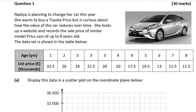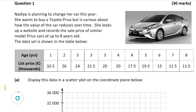Hello and welcome to the video. Matthew here, and we're going to look at question one, which is a 3-mark question on statistics and data. We're told that Nadia is planning to change her car this year — she wants to buy a Toyota Prius but is curious about how the value of the car reduces over time. She looks up a website and records the sale price of similar model Prius cars that are up to eight years old. This data is shown in a table giving the age of the car and the list price in thousands of euro.